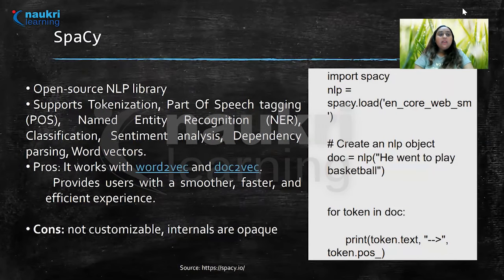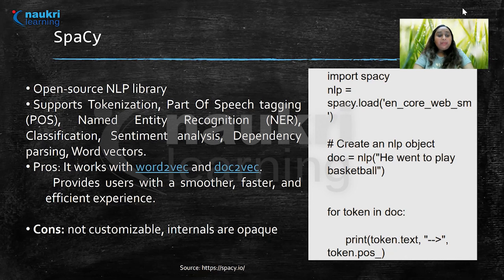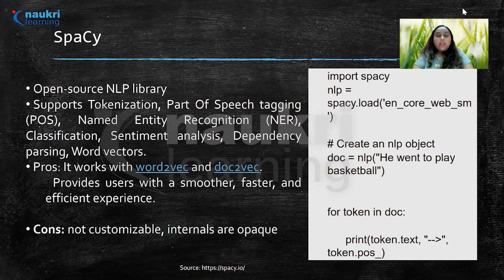The next library is spaCy — a library for advanced natural language processing tasks in Python, built with Python and Cython. spaCy comes with pre-trained statistical models and word vectors, and currently supports tokenization of over 49 languages. It features state-of-the-art speed, convolutional neural networks for tagging, parsing, and named entity recognition, and easy deep learning integration. One of its most promising features is working with vectors like Word2Vec and Doc2Vec in a very simple manner.